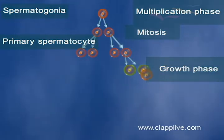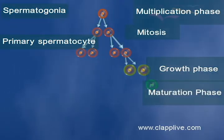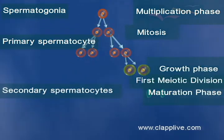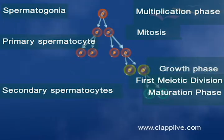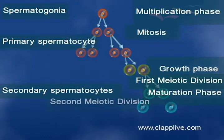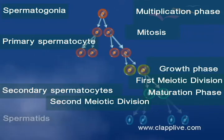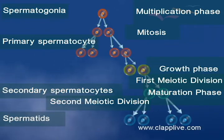The third phase is the maturation phase, where each diploid primary spermatocyte undergoes meiosis. This consists of two divisions. During the first meiotic division, each diploid primary spermatocyte produces two haploid secondary spermatocytes. The second meiotic division is an equational division. Each secondary spermatocyte produces two haploid spermatids. As a result, four equal-sized spermatids are formed from two secondary spermatocytes.